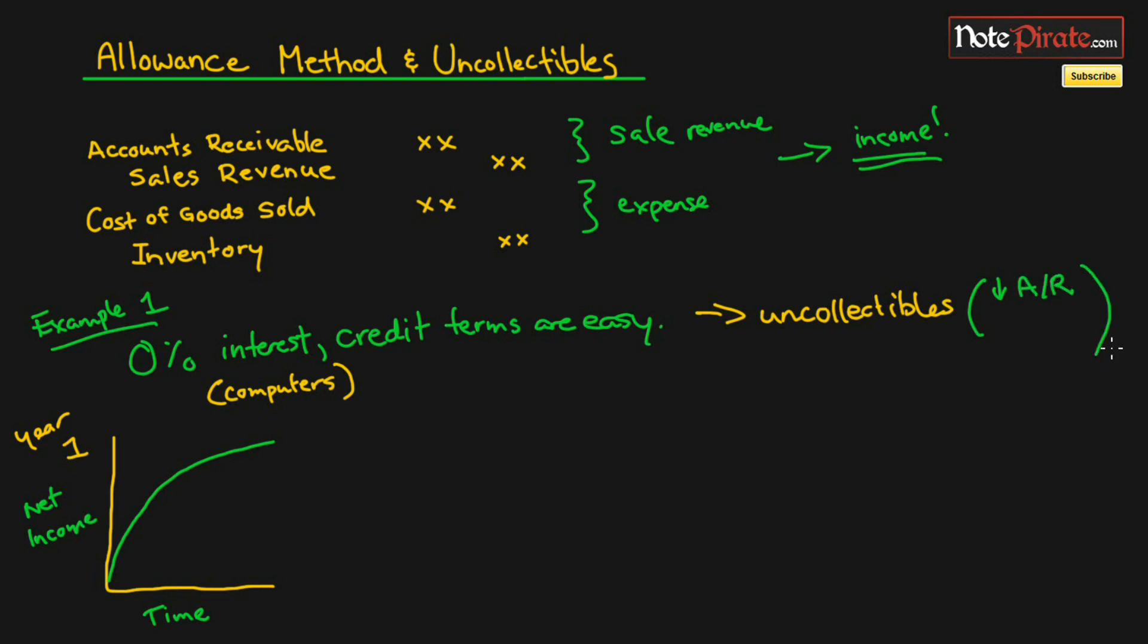Basically, we're not going to be able to claim that cash anymore. It's not going to be collectible, and our expenses are going to go up because this is going to be a bad debt expense since it's become a bad debt and we cannot collect it.